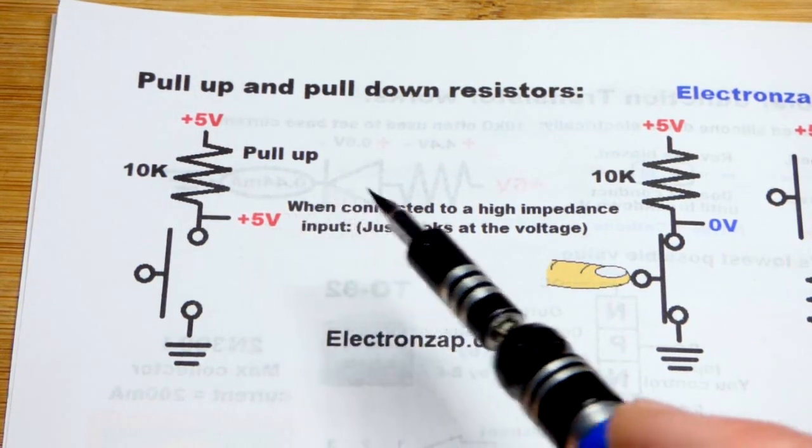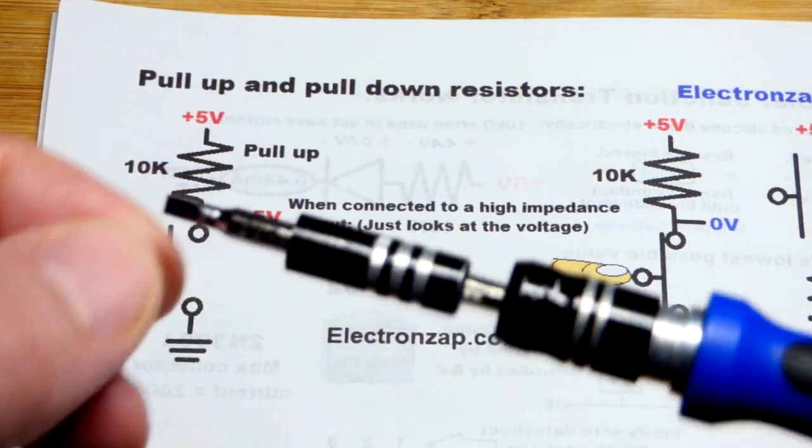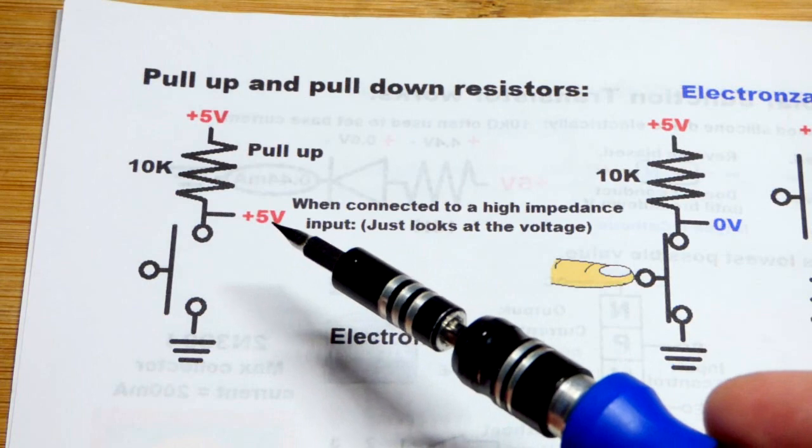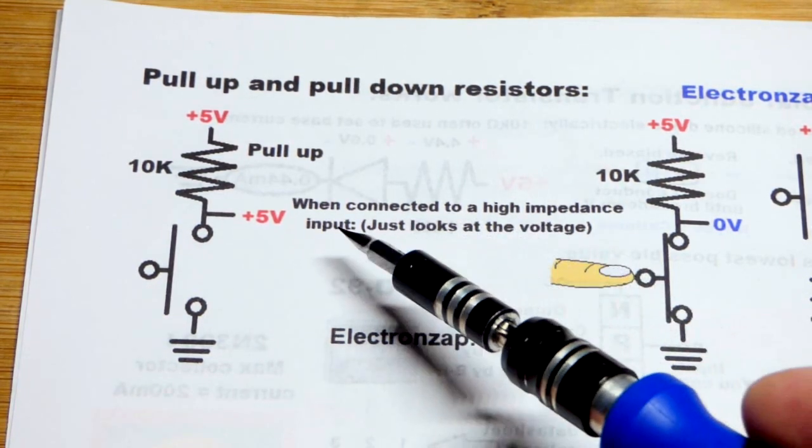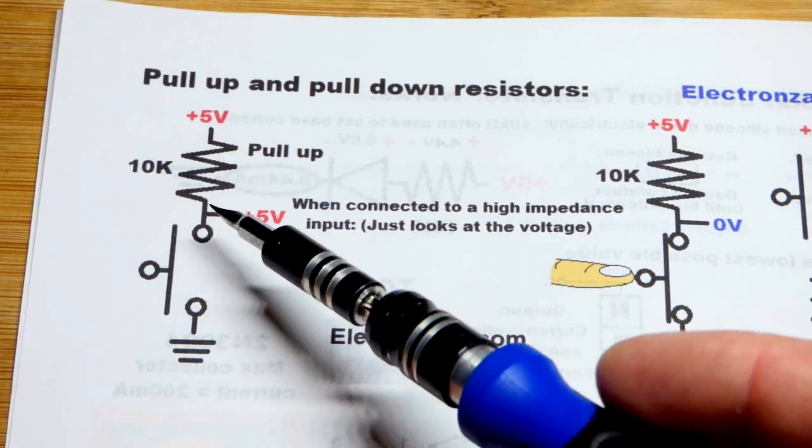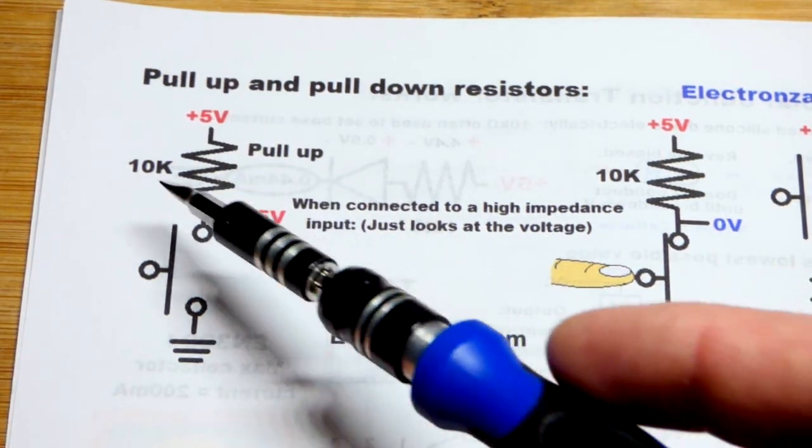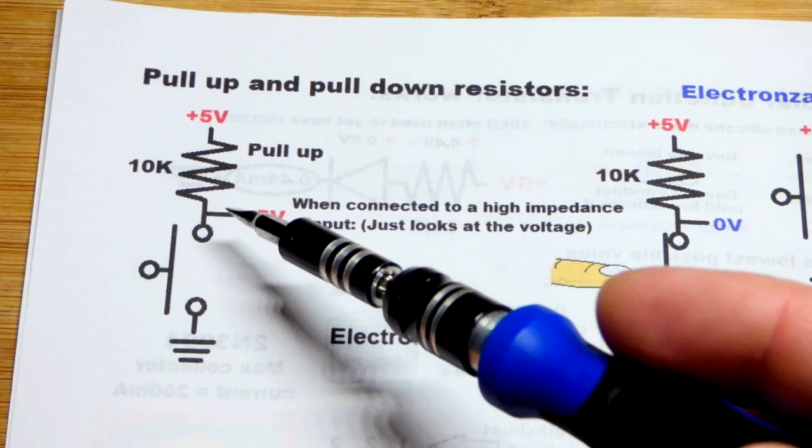So the problem is that through the air, this screwdriver is picking up signals, I'm picking up signals, and it's creating voltages, so the inputs can pick that up. With the pull-up resistor, we can give a solid 5 volts. In relationship to that, 10 kilo ohms is much less impedance than I provide, and so that voltage will get through really easily.